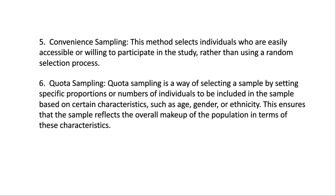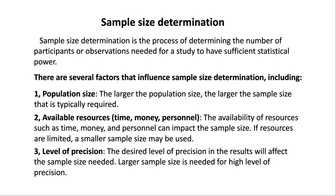Quota sampling is a way of selecting a sample by setting specific proportions or numbers of individuals to be included based on certain characteristics such as age, gender, or ethnicity. This ensures that the sample reflects the overall makeup of the population in terms of these characteristics.